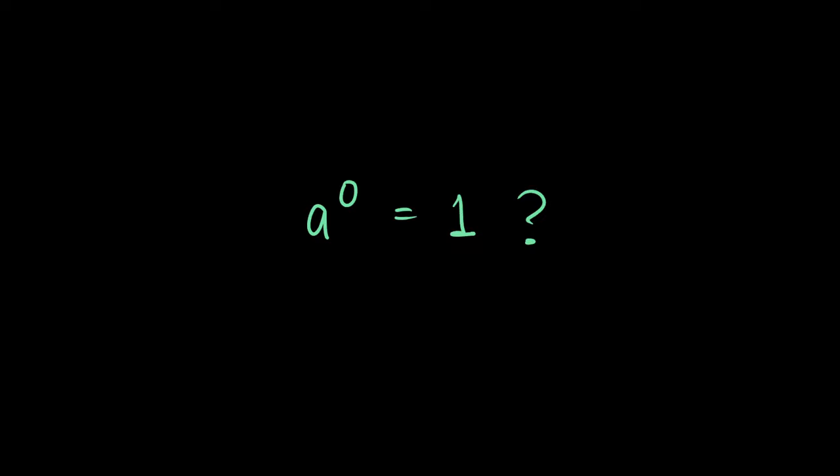a raised to the power of zero equals one. Any number raised to the power of zero equals one. You may have learned this in your class or somewhere else, but do you know why that's true? Intuitively, this doesn't really make sense. When I first encountered it, I was confused.